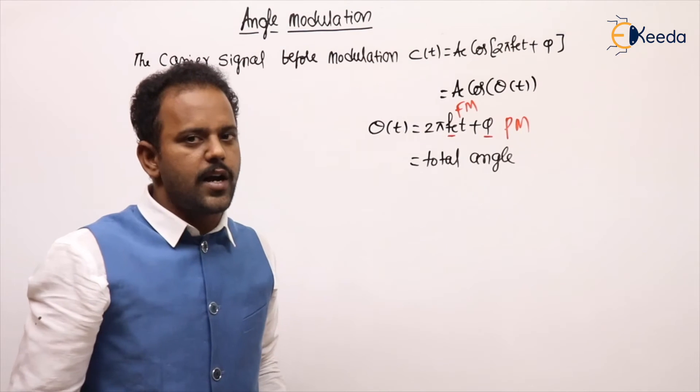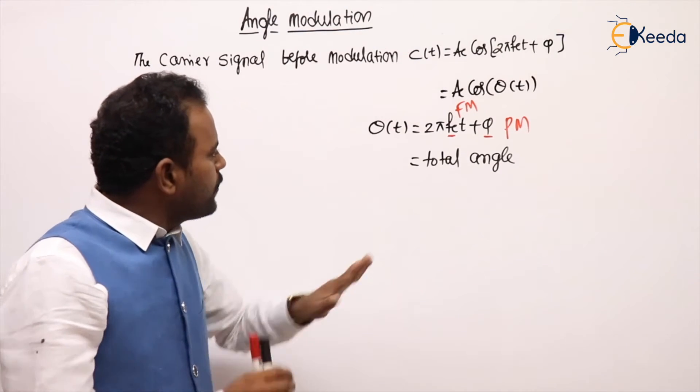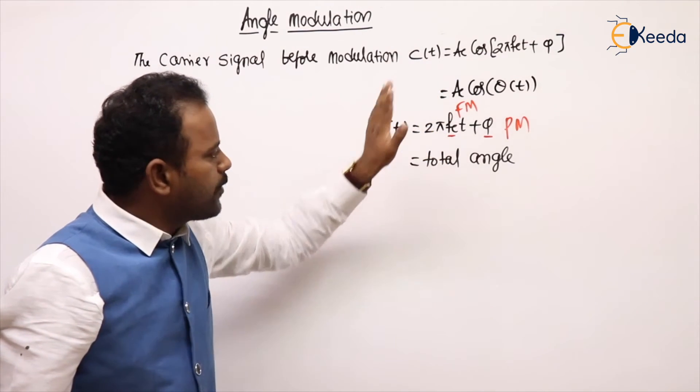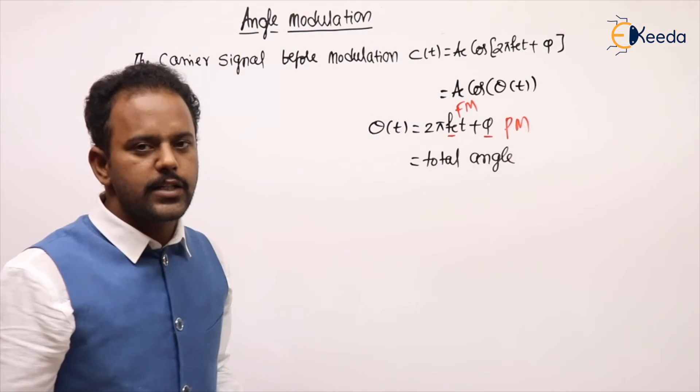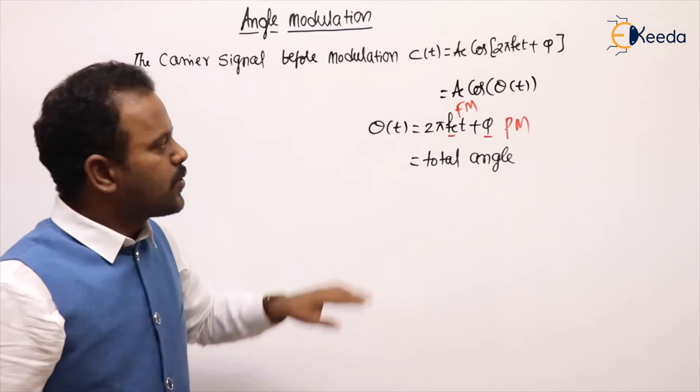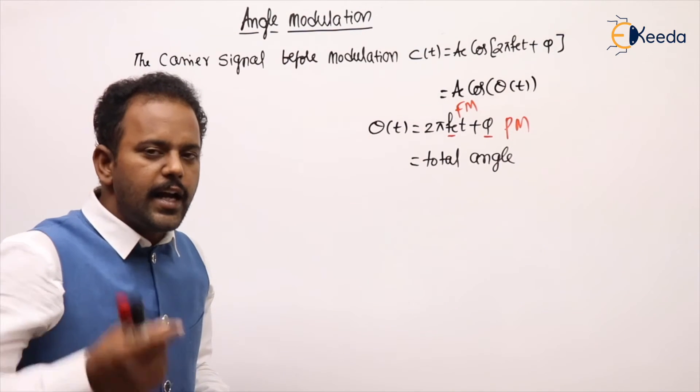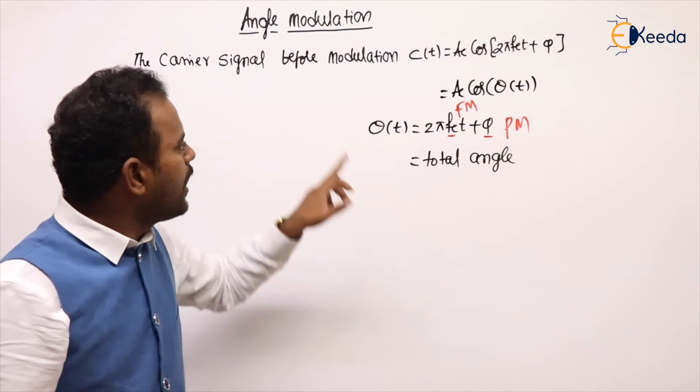We can combinedly call them as angle modulation. Both varying at a time is not there. If θ(t) is varying because of fc, frequency modulation. θ(t) is varying because of phase, that is called phase modulation. So the definition for angle modulation: if θ(t) varying linearly according to amplitude variations of message is called angle modulation.